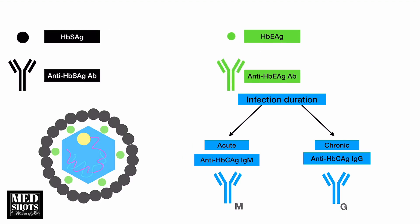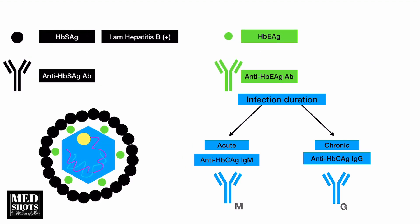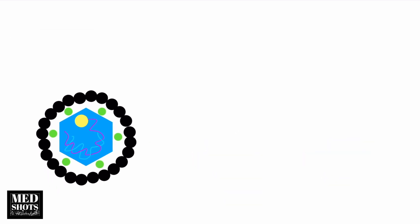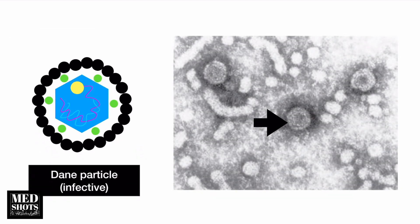HBsAg means I am Hepatitis B positive. Anti-HBs means I am cured from Hepatitis B. HBeAg means I am more likely transmitting Hepatitis B to you. Anti-HBe means I am less likely going to transmit Hepatitis B to you. And according to infection duration, we have anti-HBc IgM and anti-HBc IgG.